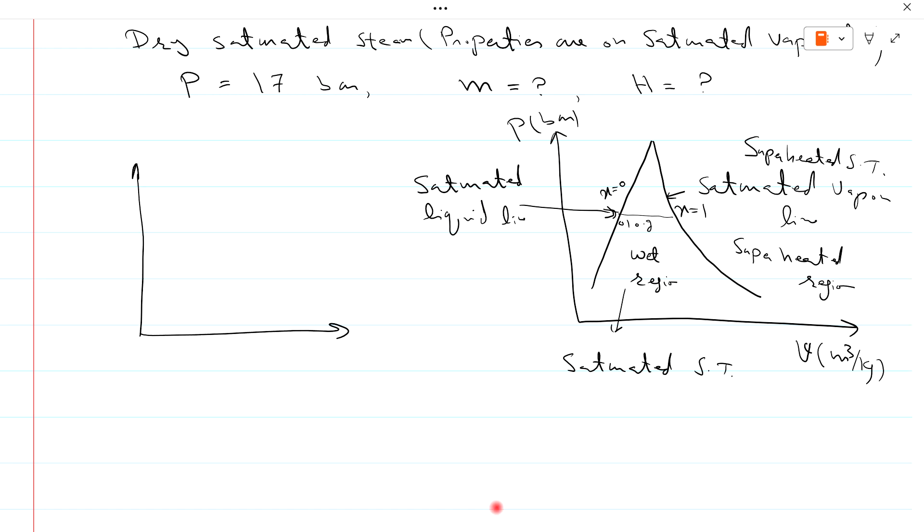So if pressure is 17 bar and volume in m³ per kg, and our total volume will be in meter cube per kg. And our enthalpy will be hg. Enthalpy will be hg, and internal energy will be ug. And at this point enthalpy will be hf and internal energy will be uf.